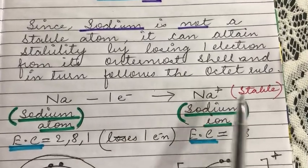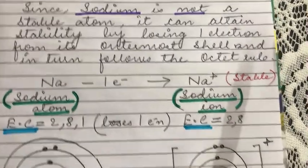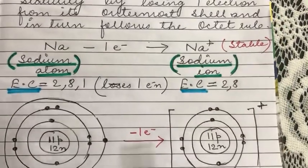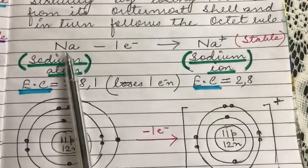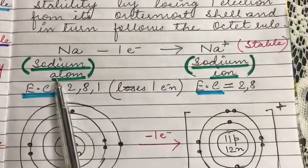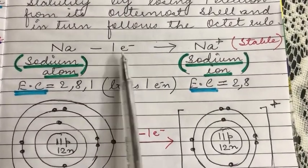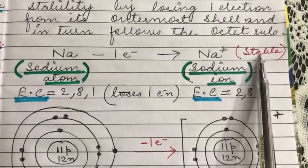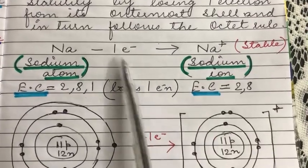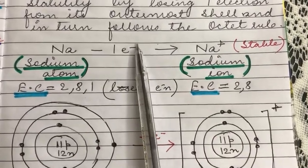Therefore, sodium prefers to lose one electron, follows the octet rule, and becomes stable. This can be represented as: sodium atom loses one electron, forms a Na⁺ ion, and becomes a stable ion. Since it has lost only one electron, it gets a plus one charge.